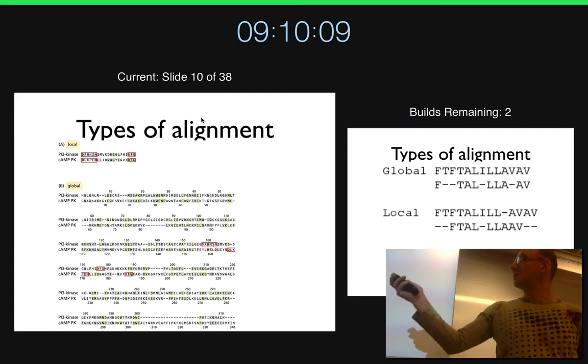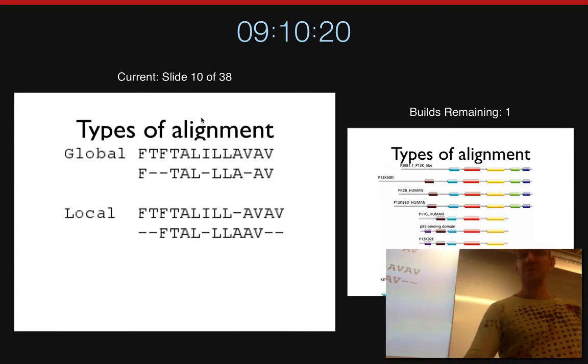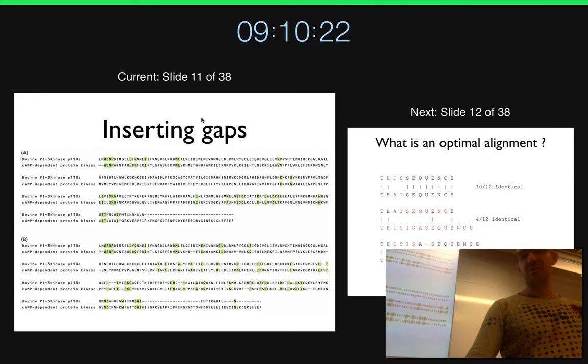We talked about two types of alignments. You can either align a small part that's very similar, or try to align everything, and you may not find these high similarity things. So local and global alignment, or Smith-Waterman. Let's skip this a moment, we'll talk more about it later.